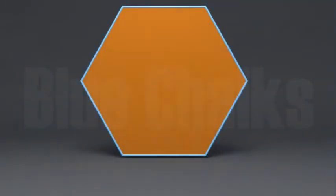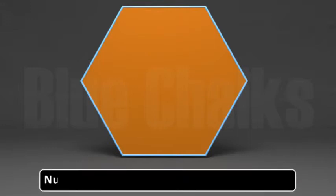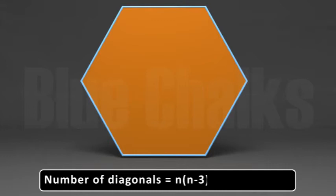For example, a hexagon has six sides. Using the formula, the number of diagonals is equal to n(n-3)/2 = 6(6-3)/2 = 9. So a hexagon has nine diagonals.